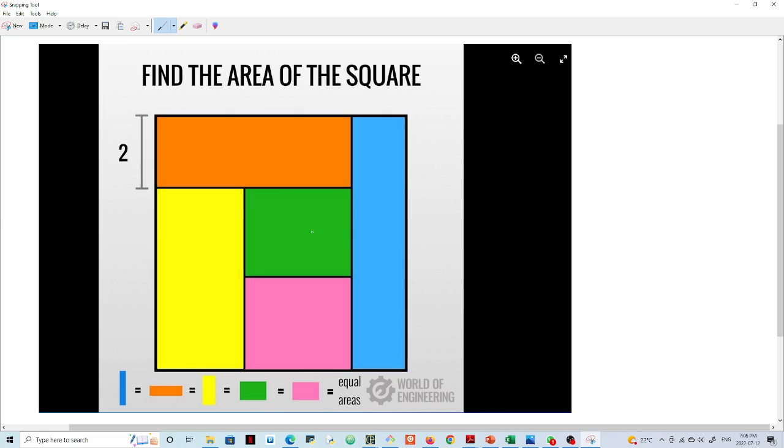This equals to the green zone, which equals to the pink zone. Now you cannot assume that any lengths are equal here. You don't know that, you can't assume that yellow is two times green and pink. You have to work it out.